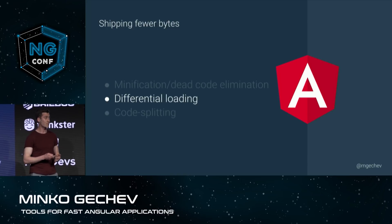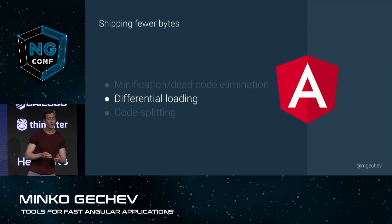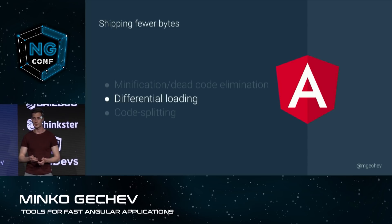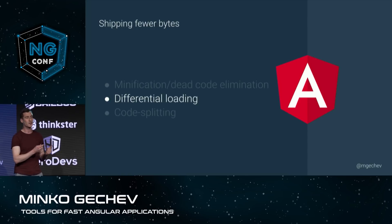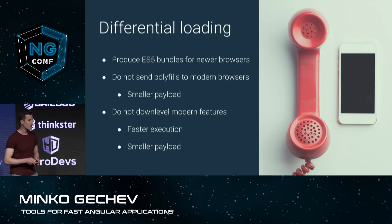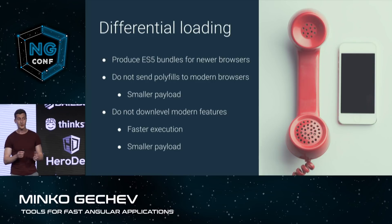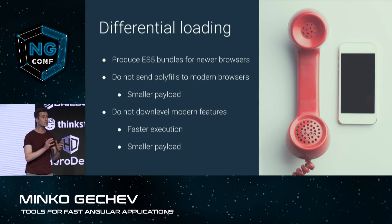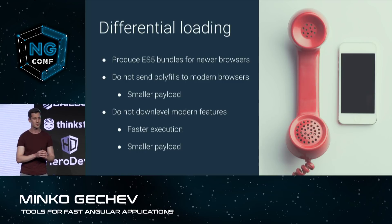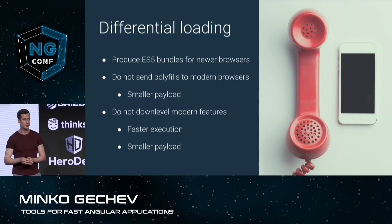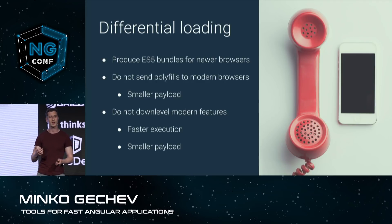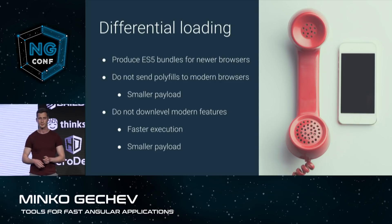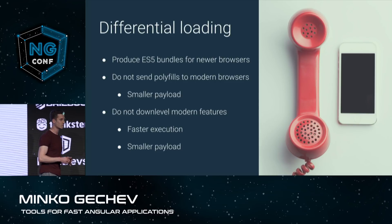Differential loading is a feature that I'm particularly excited about, especially because of its performance benefits. Our users who are on modern browsers no longer have to pay the penalty for polyfills for older browsers. Here is how differential loading is going to work: we are currently building two versions of your application — one for older browsers and one for newer browsers. We're going to build ES5 bundles for users on legacy browsers, and ES2015 bundles for users on bleeding-edge browsers.